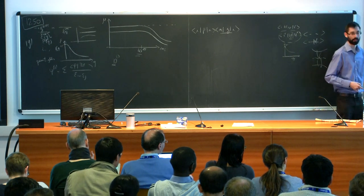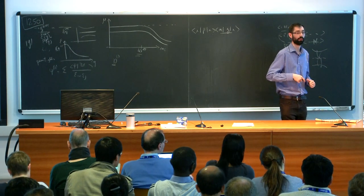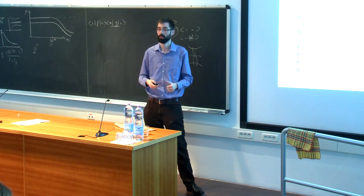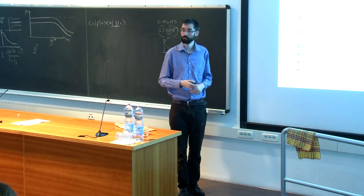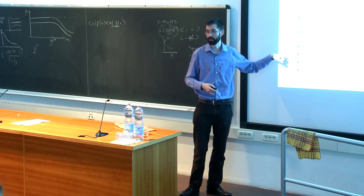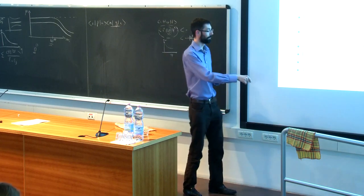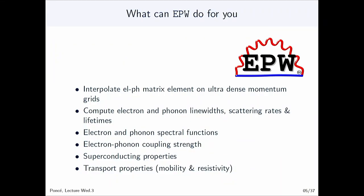In this framework, the lambda coupling strength is computed only for metals. The equation has a delta function close to the Fermi surface, so you need to have a Fermi surface — you need a metal. This specific quantity as defined requires the Fermi level. For transport properties, EPW computes mobility in semiconductors and resistivity in the case of metals.